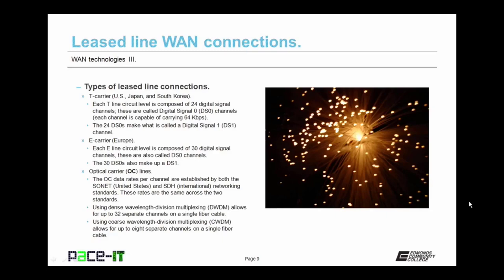When talking about fiber optic speeds, we often talk about optical carrier lines, or OC lines. The OC data rates per channel are established by both the SONET and SDH networking standards — SONET is the United States standard and SDH is the international standard. The OC rates are the same across the two standards. It's possible to multiplex multiple channels into the same fiber using dense wavelength division multiplexing, which allows for up to 32 separate channels on a single fiber cable.